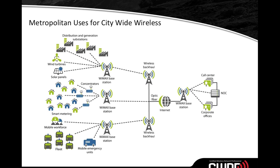For metropolitan citywide wireless use, you'll see WiMAX base stations in several locations. The dotted lines represent wireless connectivity — you see the wireless backhaul going from base station to base station. Distribution and generating substations, power plants, wind turbines, and solar panels are gathering information and backhauling it back to a fiber optic connection, which goes across the internet back to another WiMAX base station with connectivity to the call center, the network operations center, and corporate offices.